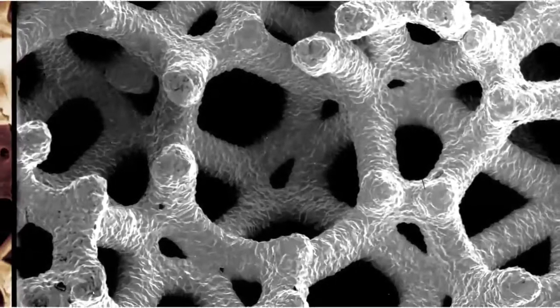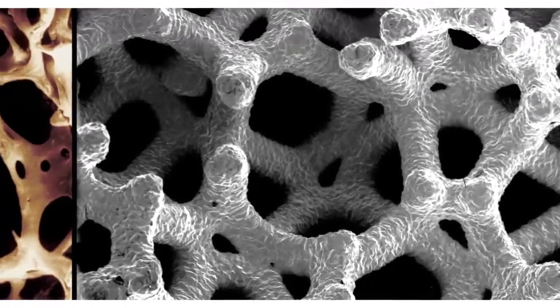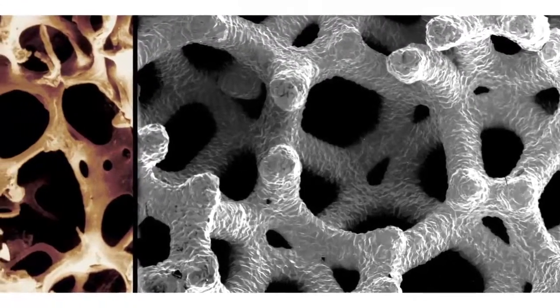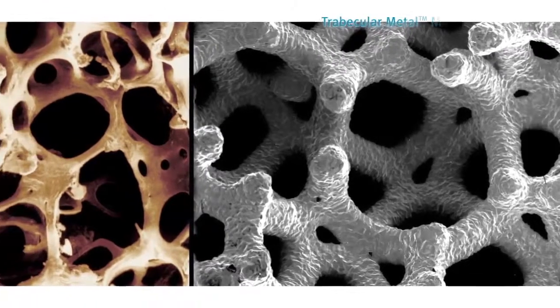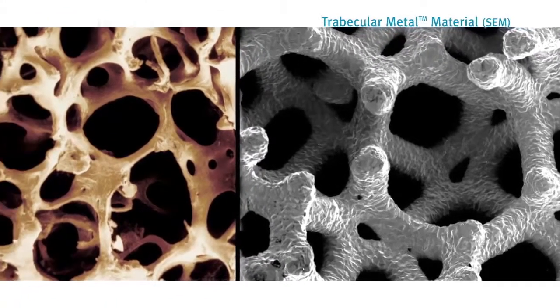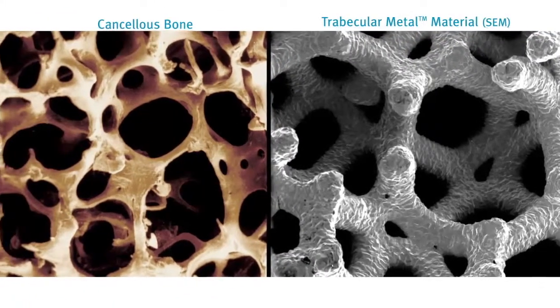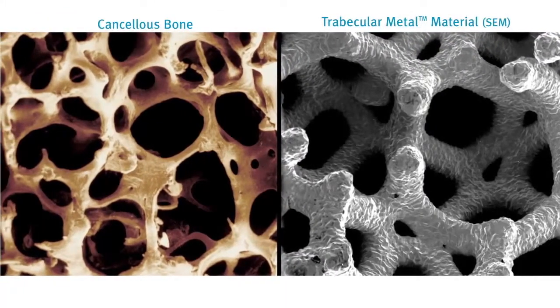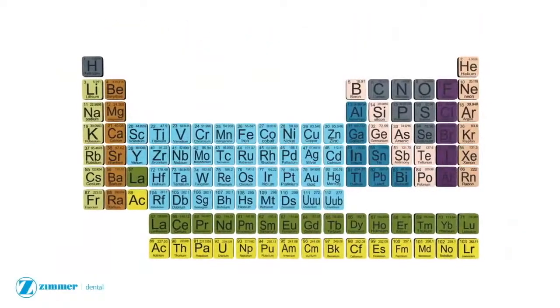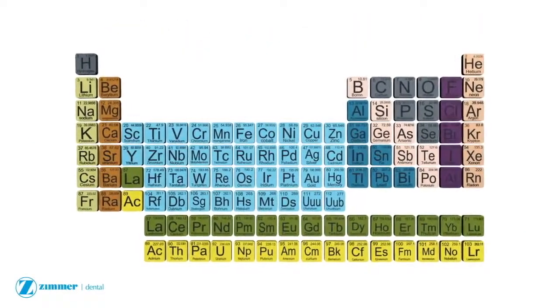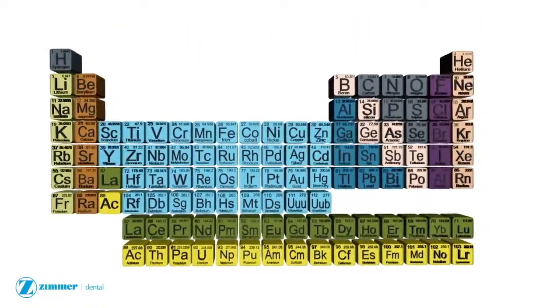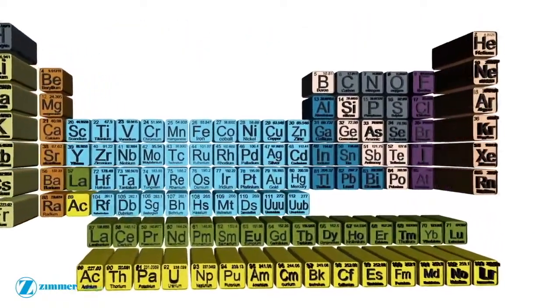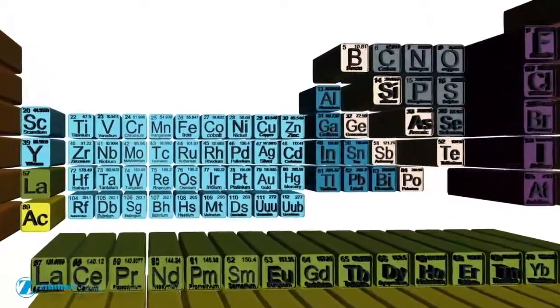Trabecular metal technology is a three-dimensional material, not an implant surface or coating. Its structure is similar to cancellous bone. Trabecular metal material is made of tantalum, element number 73 on the periodic table.